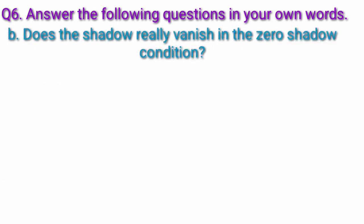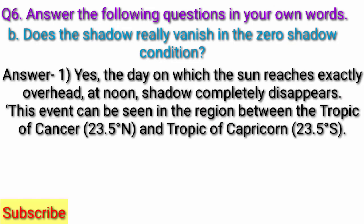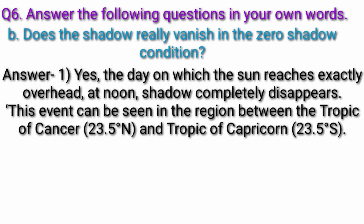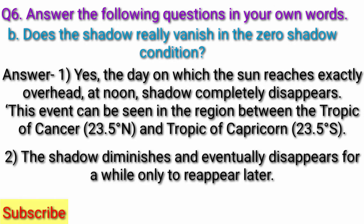Question B: Does the shadow really vanish in the zero shadow condition? Answer: Yes. The day on which the sun reaches exactly overhead at noon, the shadow completely disappears. This event can be seen in the region between the Tropic of Cancer and Tropic of Capricorn. The shadow diminishes and eventually disappears for a while, only to reappear later.